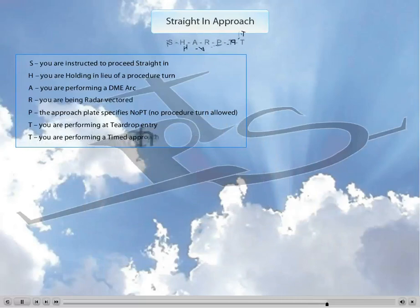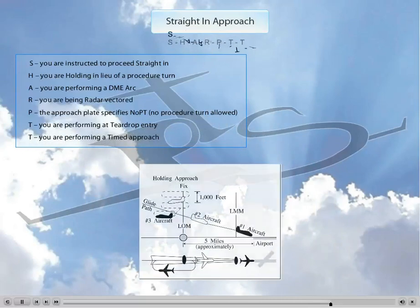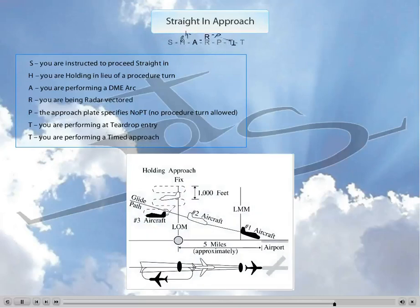And finally, the second T stands for Timed approaches. This is explained later on when we explain ATC procedures in our courses, but a timed approach is something that you would do at, for example, Sun 'n Fun or Oshkosh whenever there's a large gathering of aircraft.